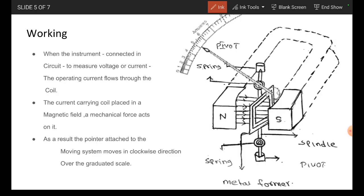Coming to the working, when the instrument is connected to a circuit to measure voltage or current, the operating current flows through the coil. Through these springs it is flowing, passing through the coil, and it comes out from the bottom spring.